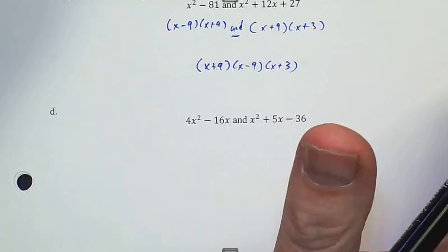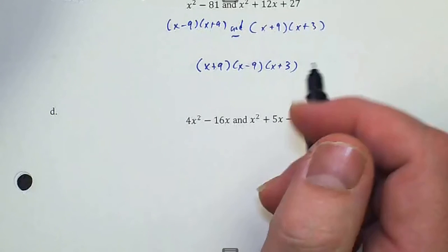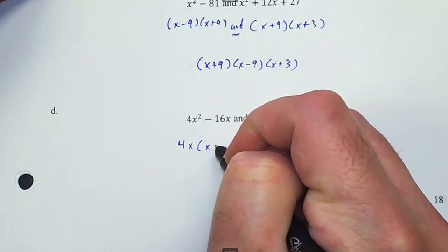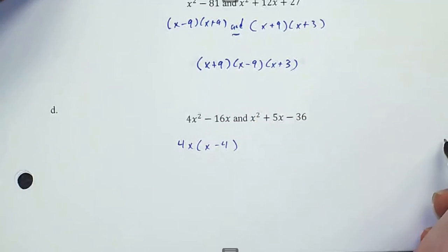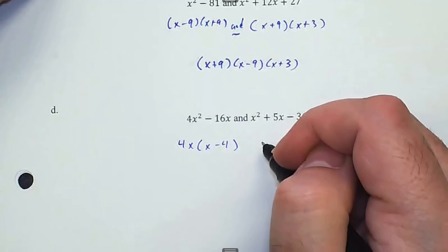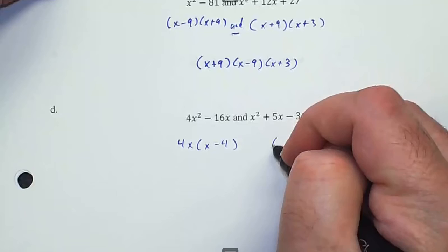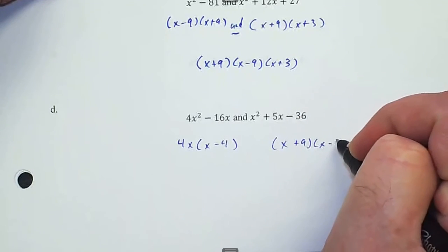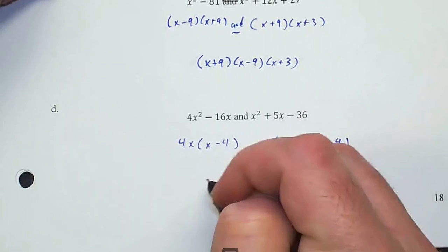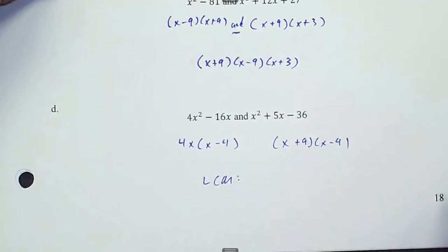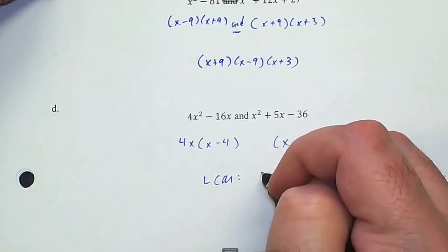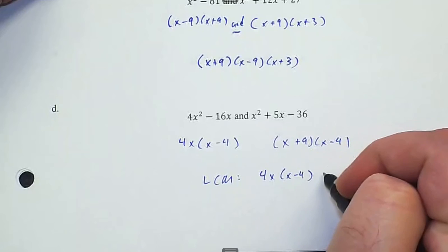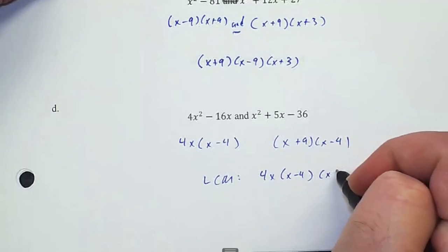On the next one I can factor out a 4x, giving x minus 4. The other expression factors as x plus 9 and x minus 4. So our least common multiple is 4x times (x minus 4) times (x plus 9).